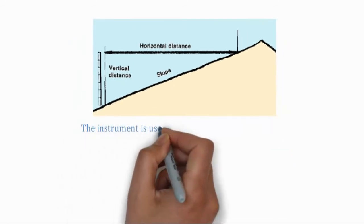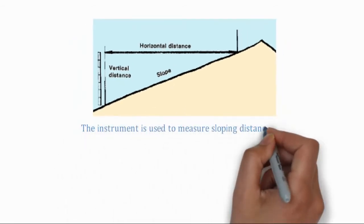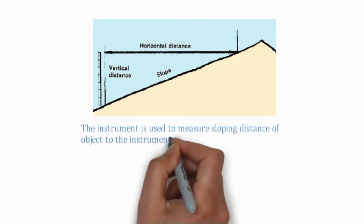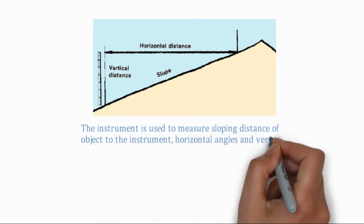The instrument is used to measure sloping distance between the object and the instrument, also horizontal angles and vertical angles.